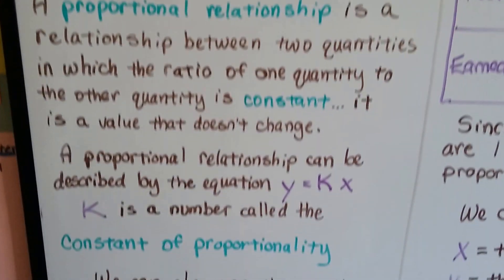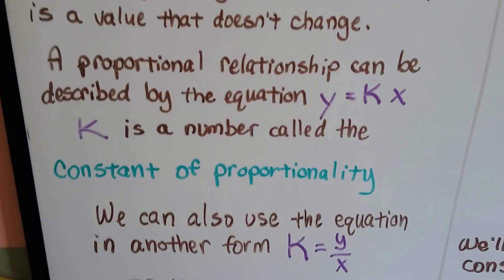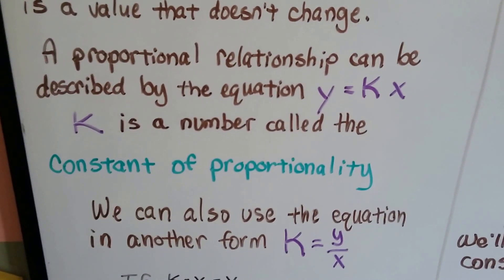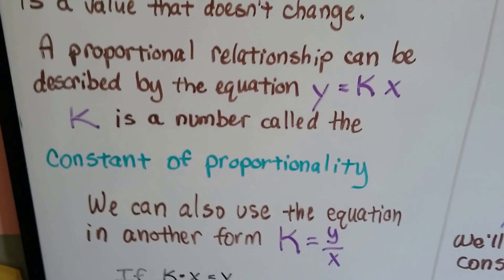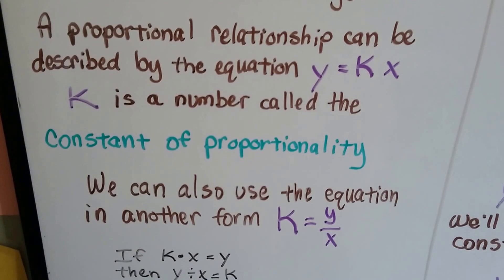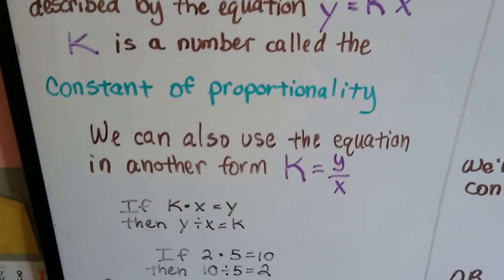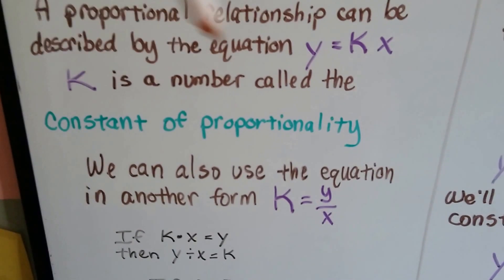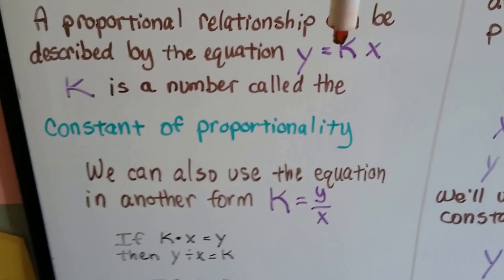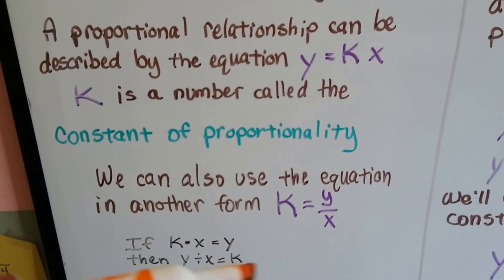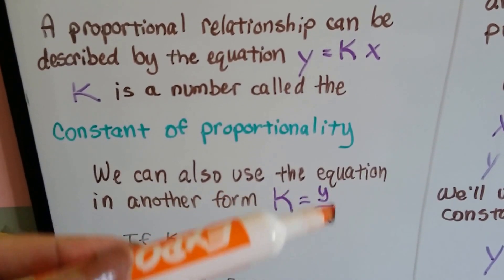A proportional relationship can be described by the equation y equals kx. And k is a number called the constant of proportionality. We can also use the equation in another form, k equals y over x. So see, here we did it as multiplication, k times x. Here we're doing it as division, y over x.